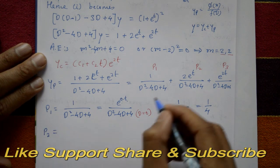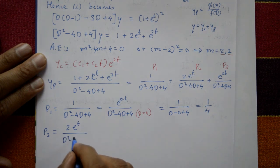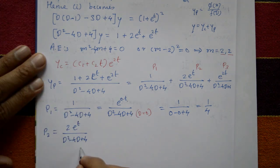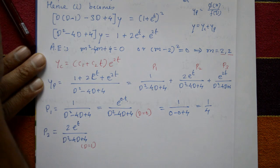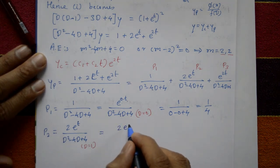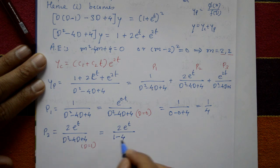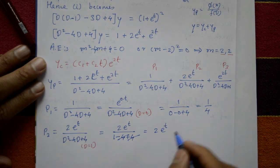P2 equals 2e^t upon (D² − 4D + 4). For e^(at), put D equal to a; here a equals 1. Substituting D=1: denominator is 1 minus 4 plus 4 equals 1. So P2 equals 2e^t divided by 1, which is 2e^t.